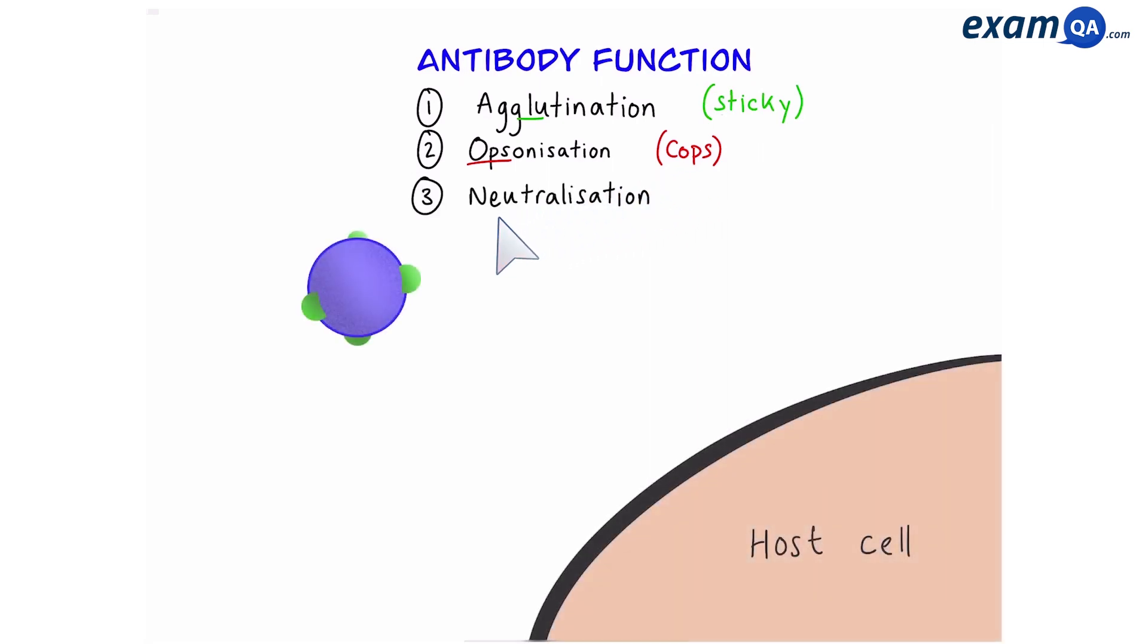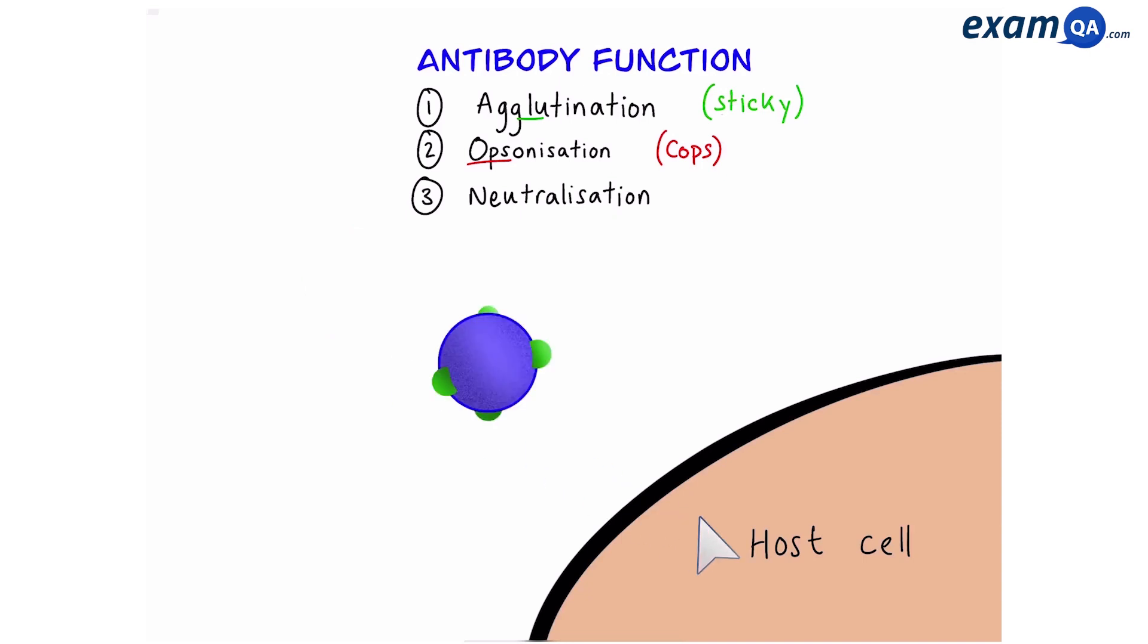Let's say on the left we have a virus. It's trying to enter a host cell. Now before it can bind to the host cell, the antibodies will bind around the antigen. This means the pathogen can no longer enter and as a result it can't divide anymore.